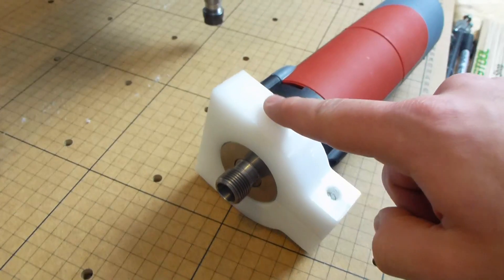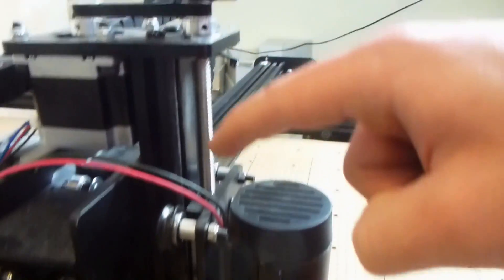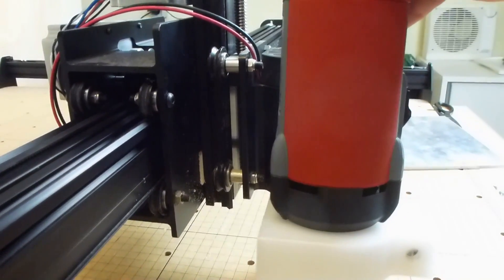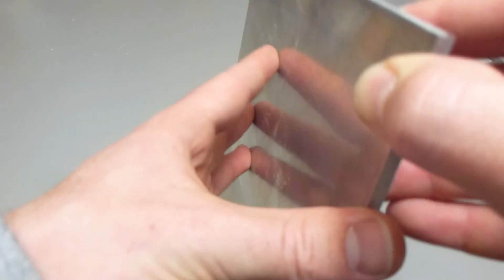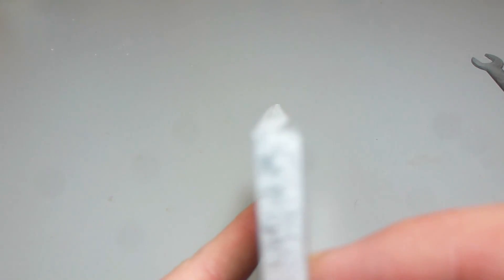Now with this mounting bracket done I next need to make this mounting plate that travels along the Z-axis, in which this router assembly can be screwed into. The material I want to use is this aluminum plate. Problem is it's not perfectly flat, so I have to try to bend it flat again first.